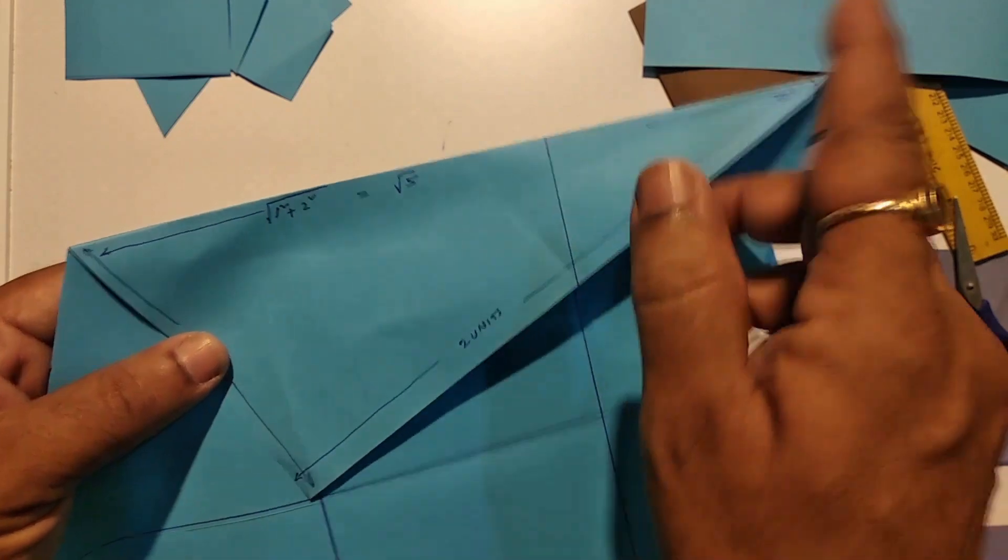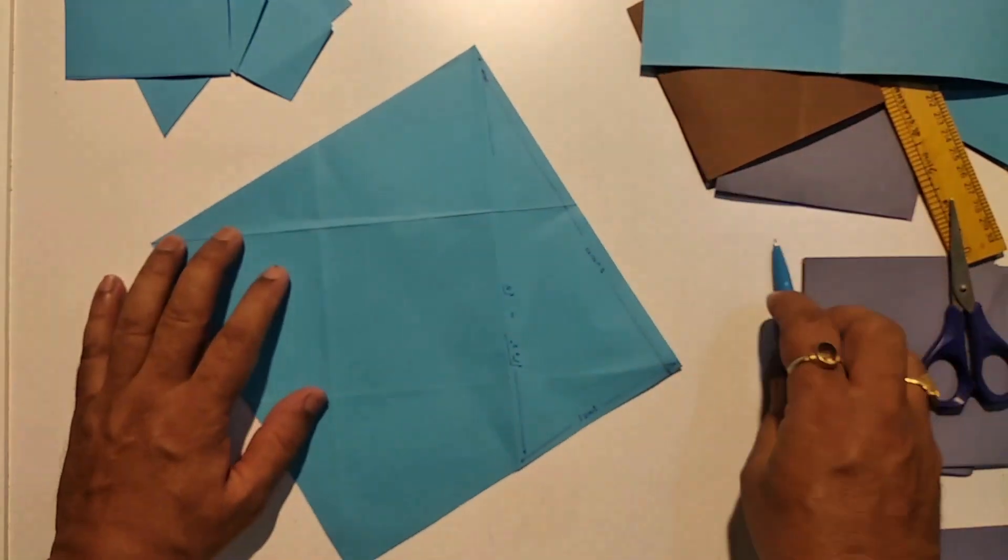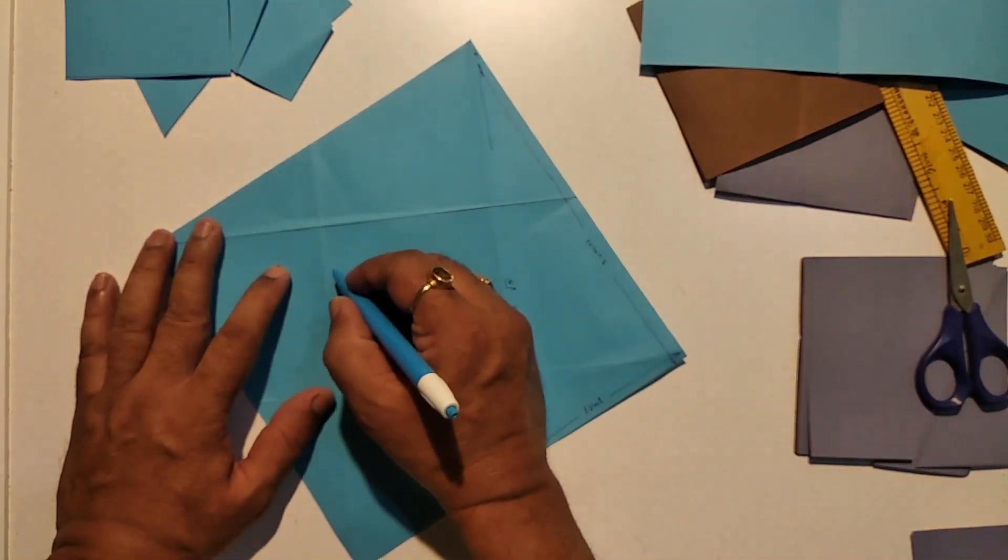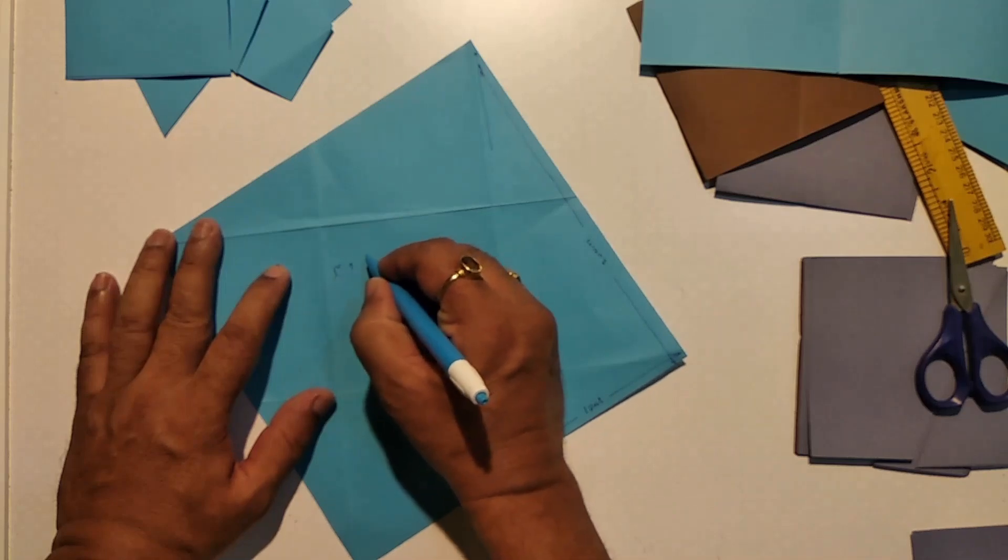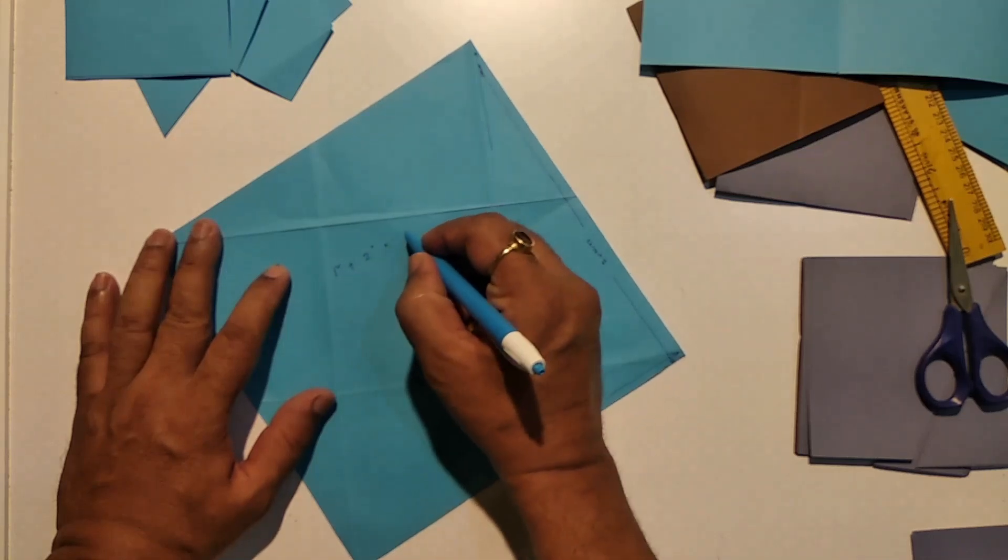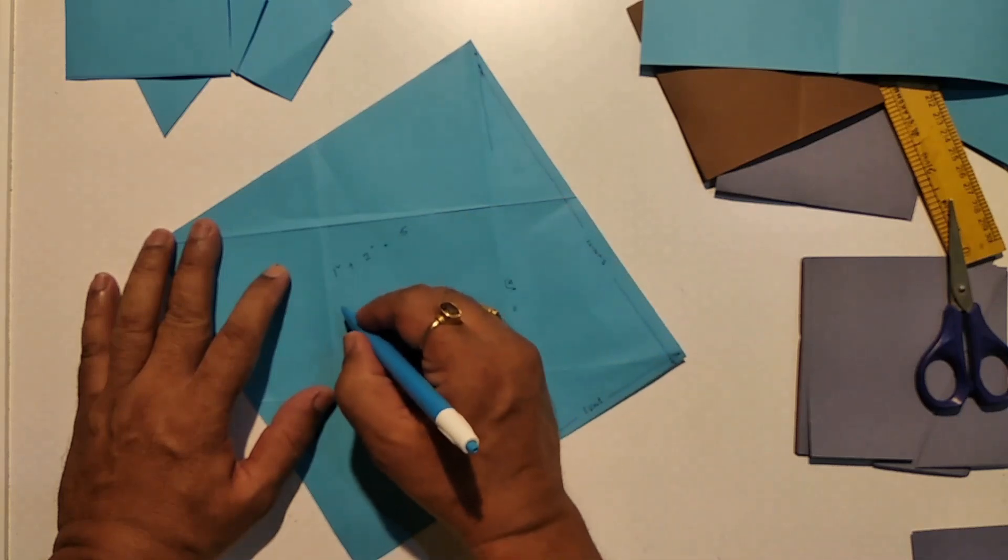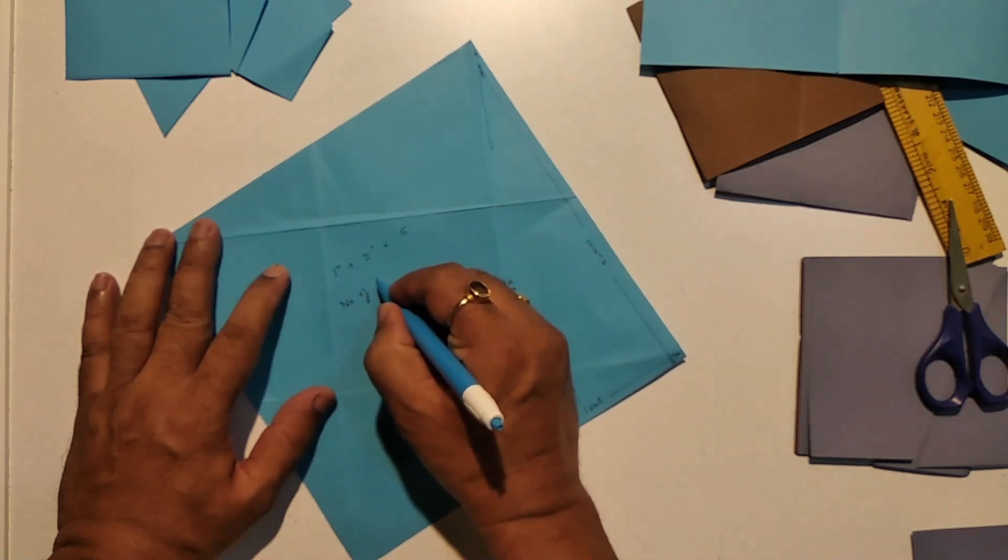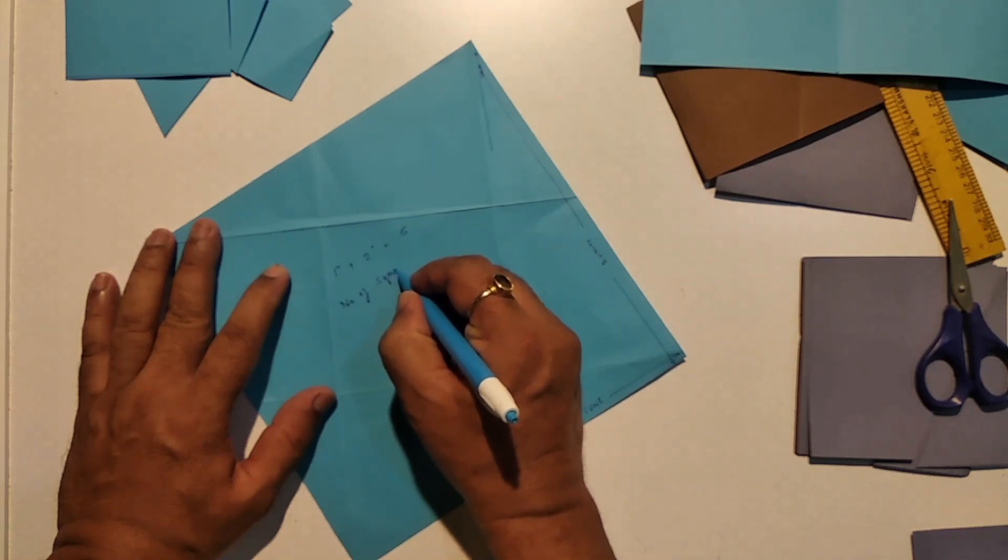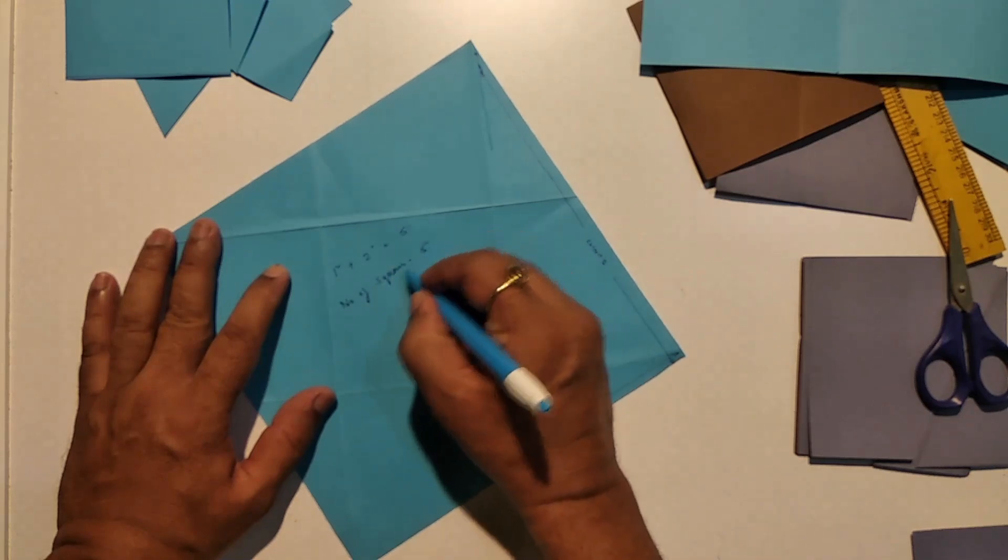That gives the number of squares we get. So one squared plus two squared equals five. So the number of squares we get in this puzzle is five.